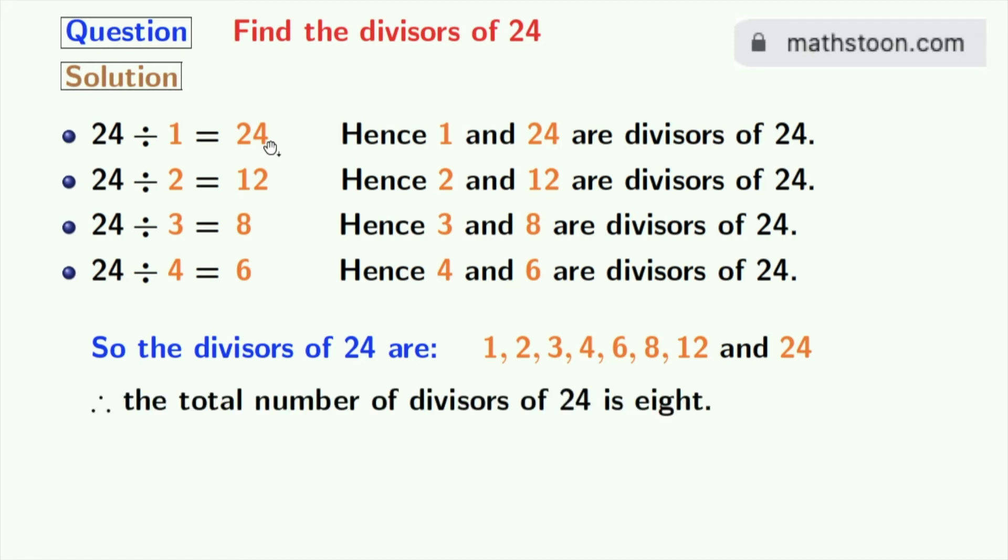Thus, the total number of divisors of 24 is 8. Now if we look at the divisors, we can see that 2 and 3 among these numbers are prime numbers because these two numbers do not have